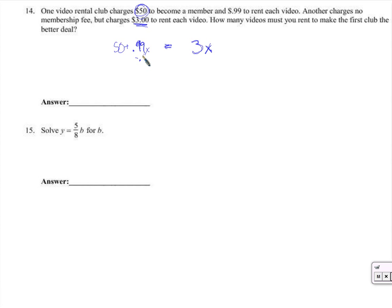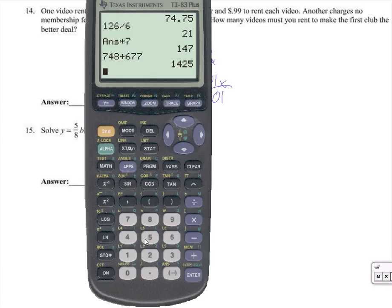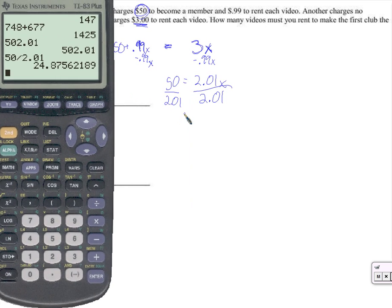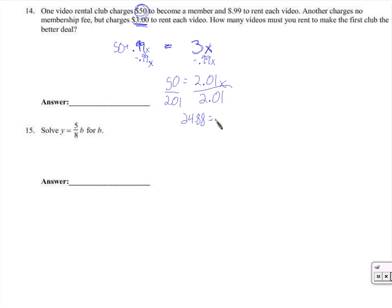We subtract 0.99x from both sides — 3x minus 0.99x — and we have 50 equals 2.01x. We divide by 2.01. 50 divided by 2.01 — let's call it 24.88. So x is 24.88, but what does that represent?